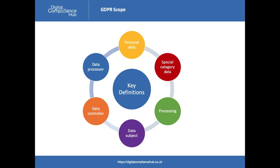There's also a category called special category data, which used to be called sensitive data. It includes things like health information, sexual orientation, religious beliefs, trade union membership, biometric data used for identification, and genetic data. These are more sensitive in the sense that people will be more protective of them. If you're a care home processing medical information about a patient, you're processing special category data as well as ordinary personal data, and GDPR has special requirements around that.